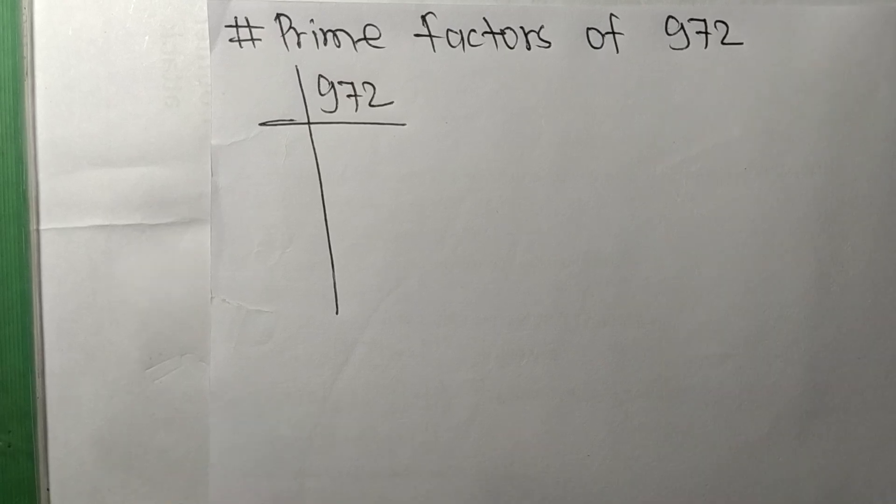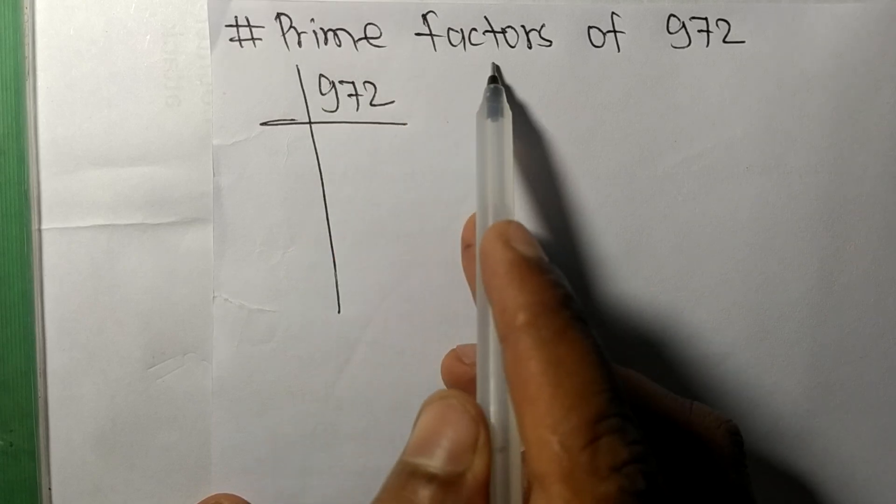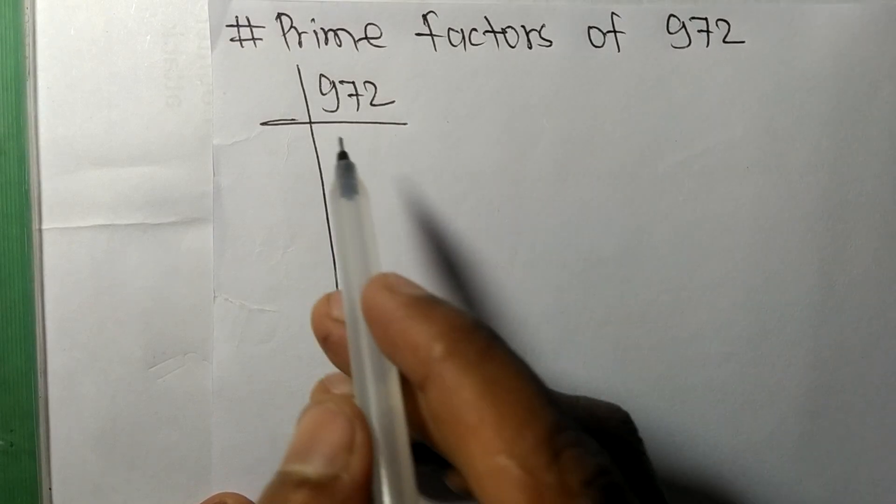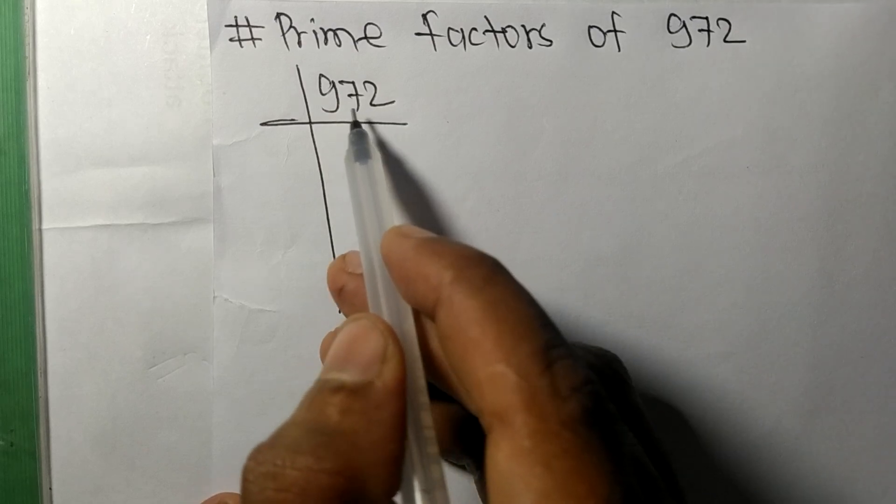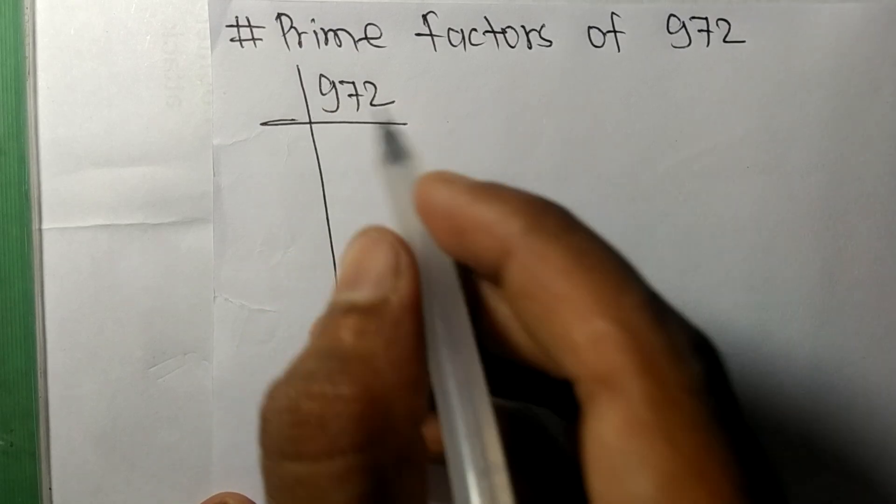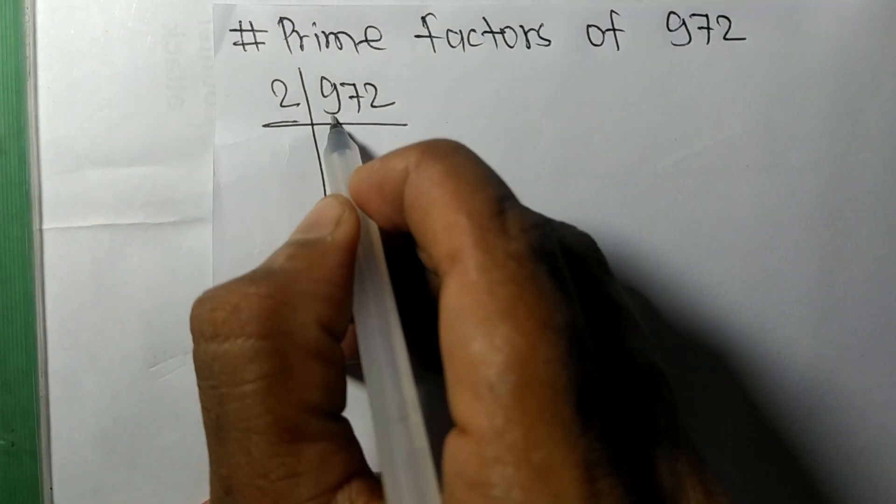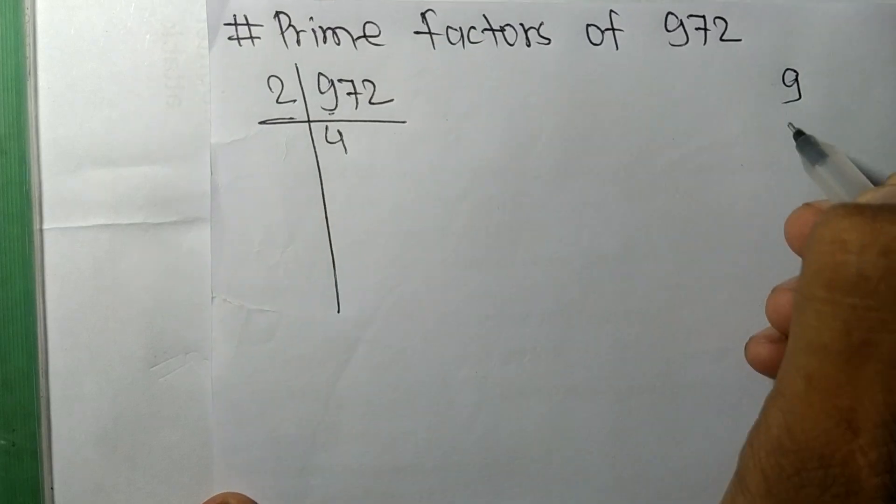So today in this video we shall learn to find the prime factors of 972. It contains an even number at last, so it is exactly divisible by 2. First we have 9, so 2 times 4 means 8.